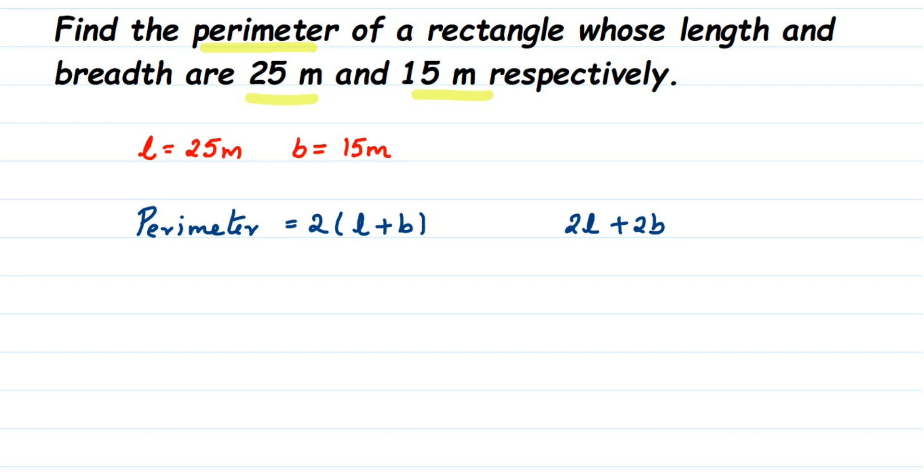So substitute the value of length and breadth here. So it will be equal to 2 into length is 25 and breadth is 15. I'm going to write down the units at the end. So this is equal to 2 into 25 plus 15 is 40. So 2 into 40 is equal to 80, so we'll get 80 meters.